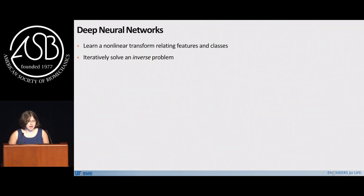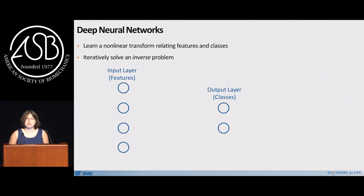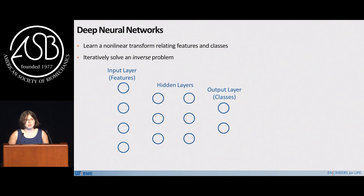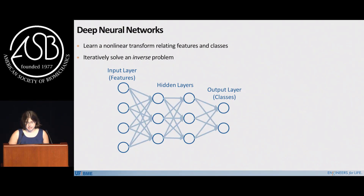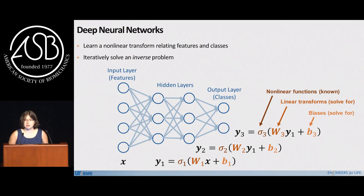The last method is deep neural networks, which we're hearing a lot about in recent years. This is essentially solving an inverse problem — we know how to solve inverse problems as biomechanists. If you have input layers defining your features and output layers defining your classes, you find the math between them. 'Deep' just means you put more than one layer in between them — you made your math a little more complicated. There are a lot of decisions to make regarding how many layers there are and how you connect and solve the math behind them.